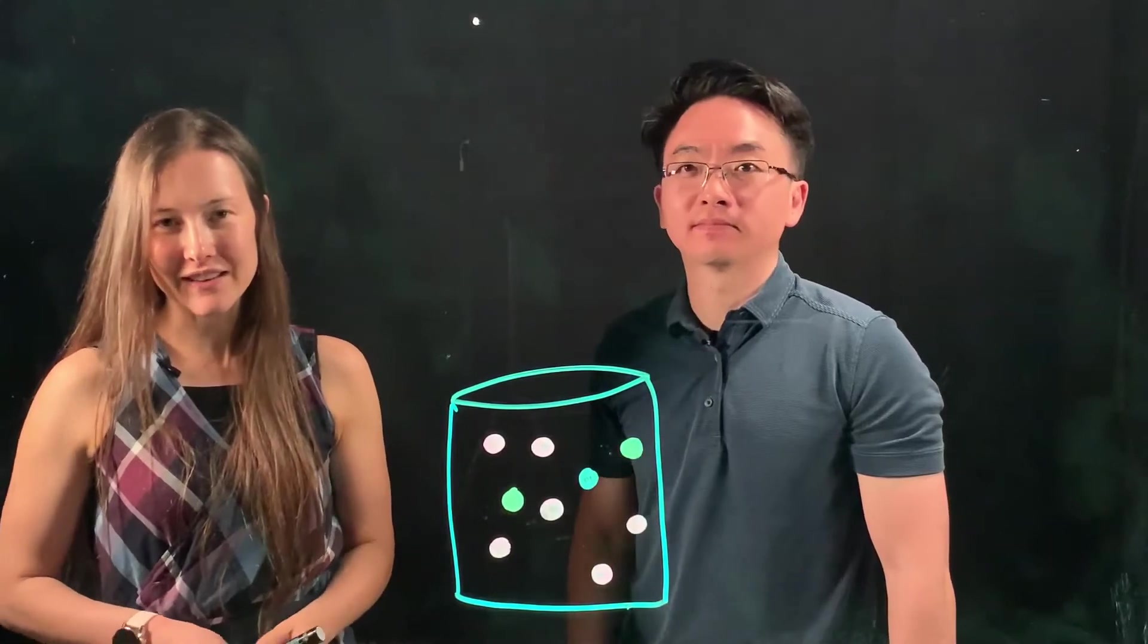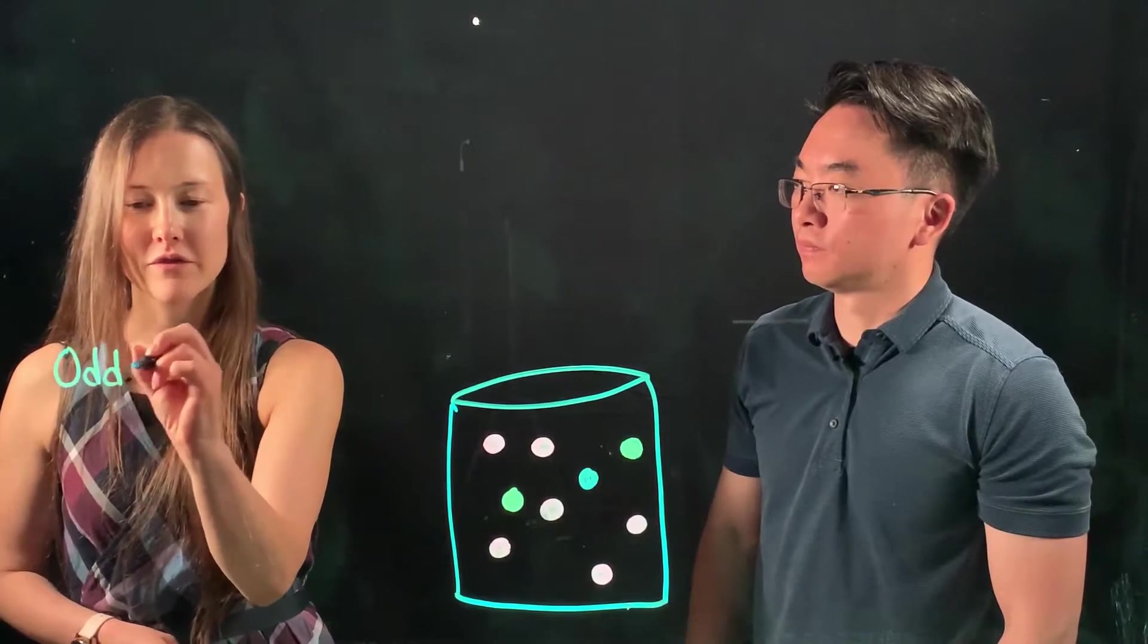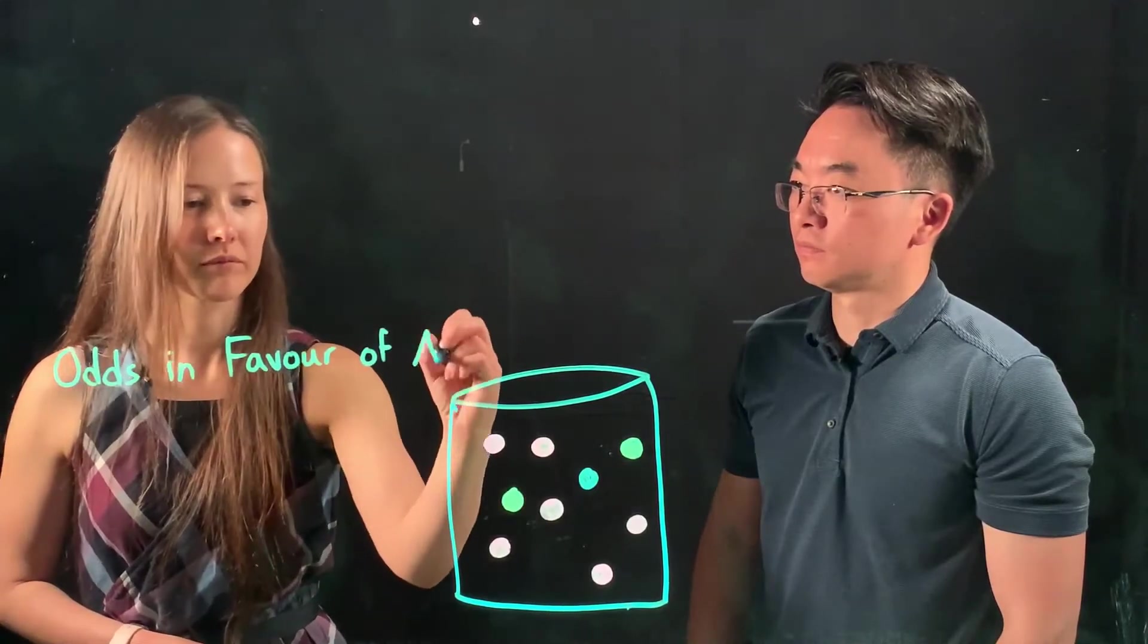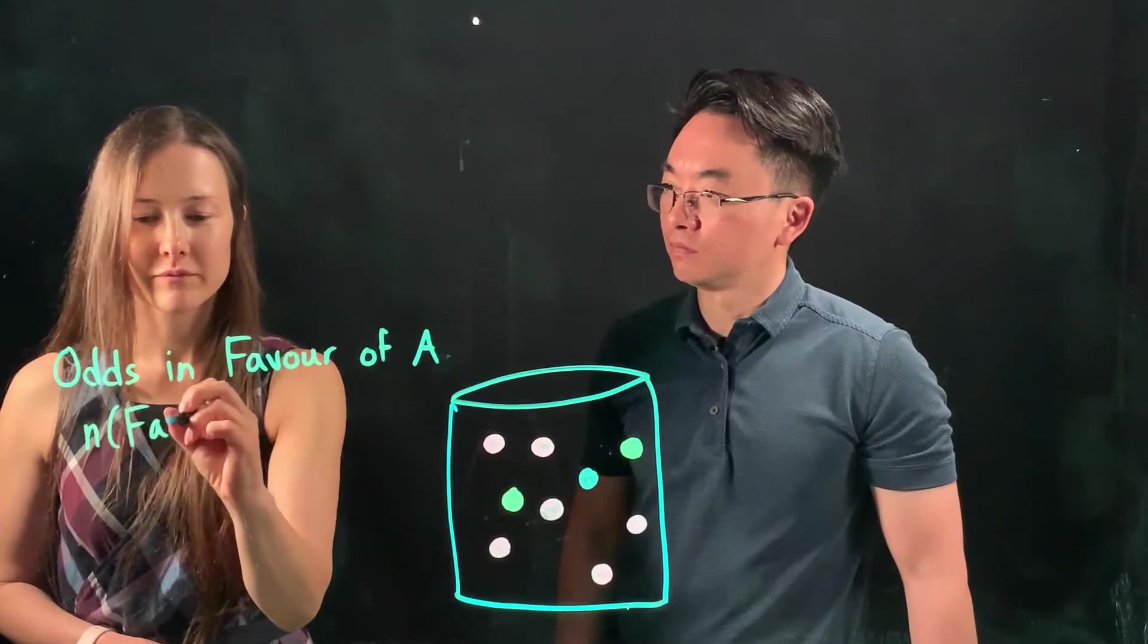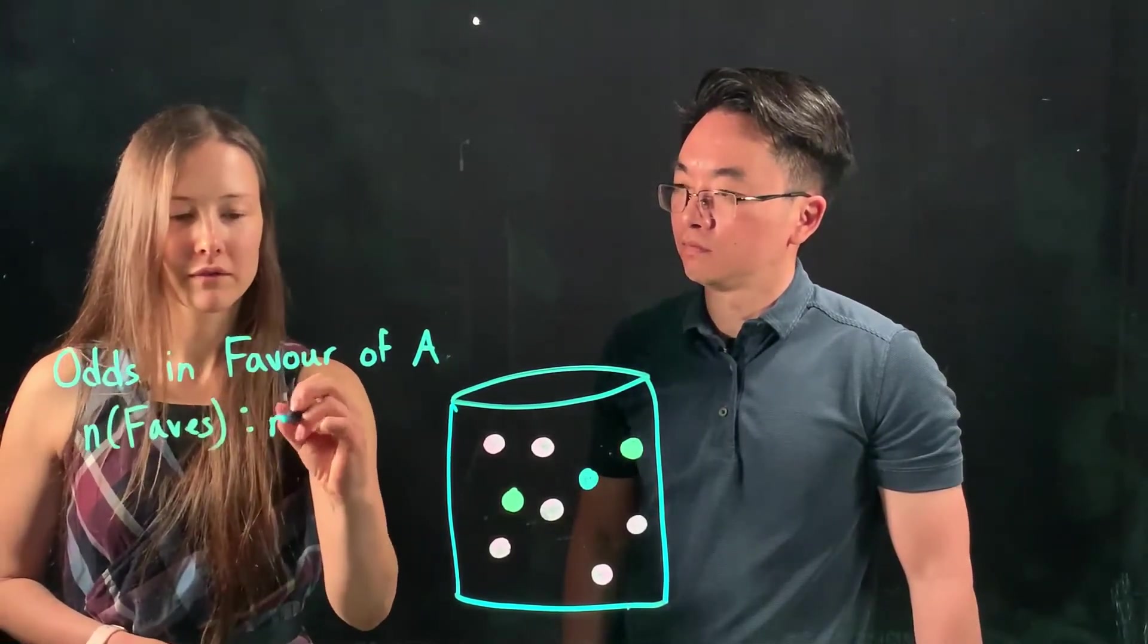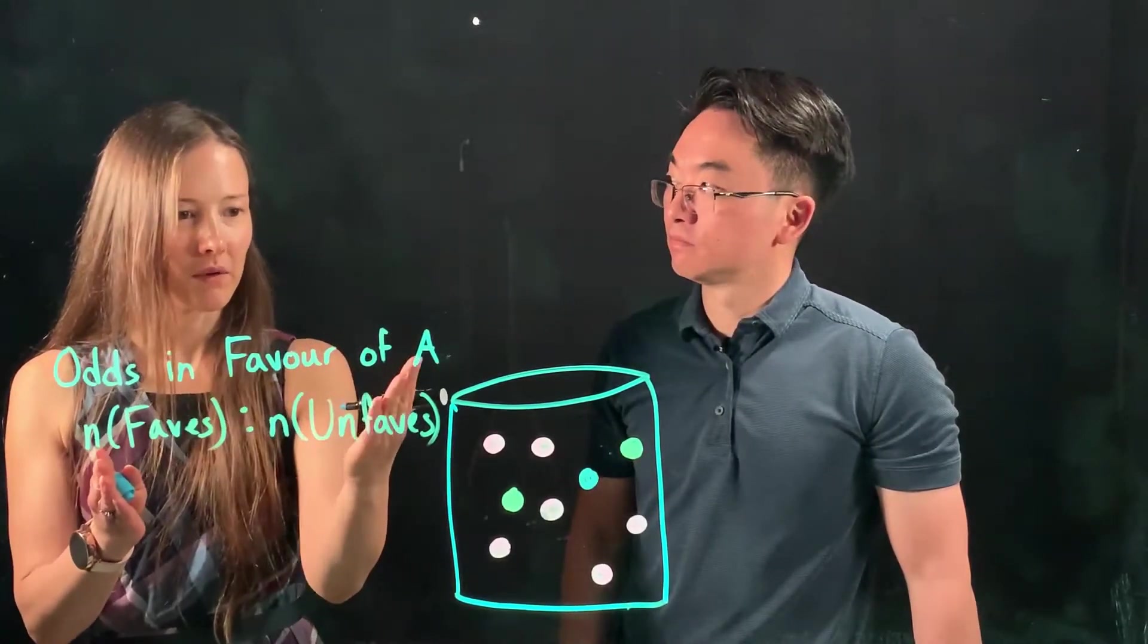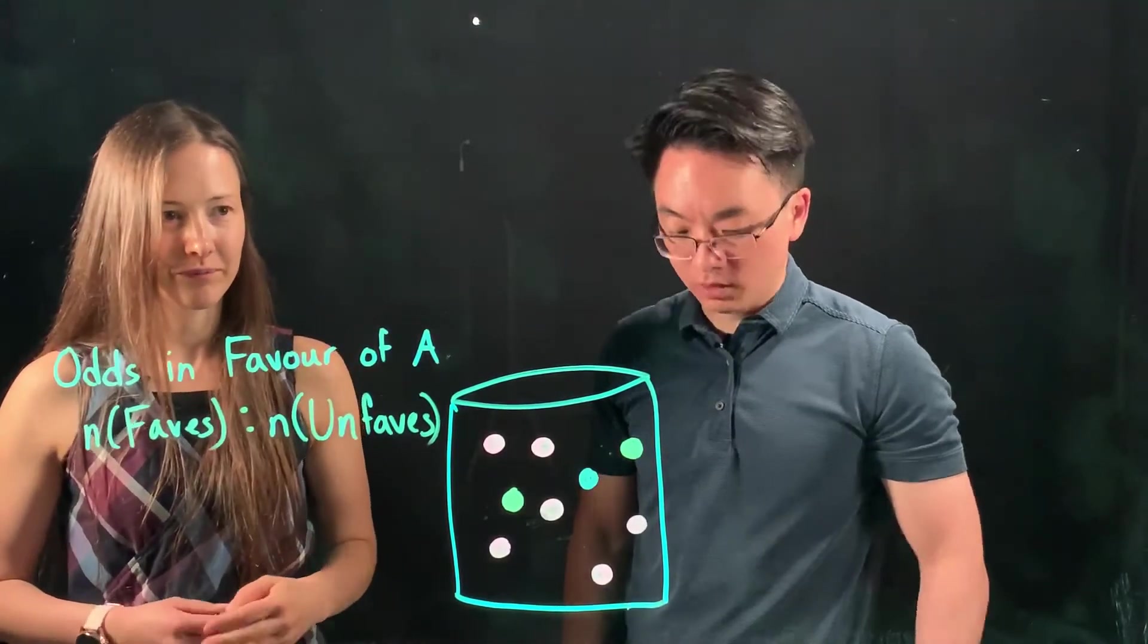Let's start by looking at the definition of odds in favor of an event. So let's say odds in favor of an event, let's just call it A. That would be the number of faves compared to the number of unfaves. I like it. So the number that we have for event A compared to the number that are not event A.